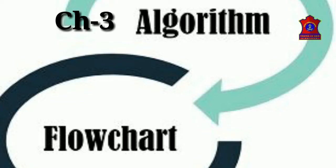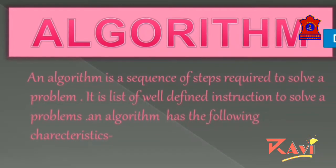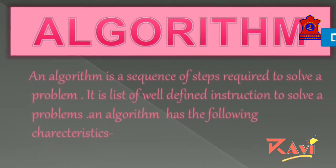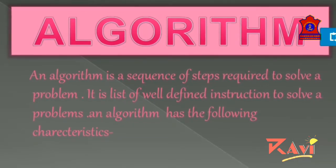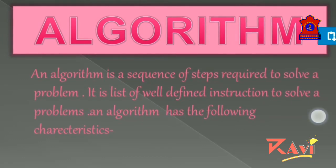So first of all, what is an algorithm? An algorithm is a sequence of steps required to solve a problem. It is a list of well-defined instructions to solve a problem.